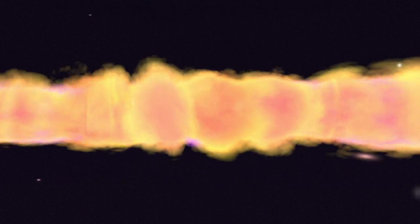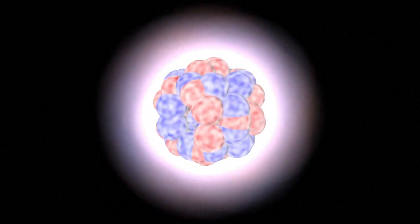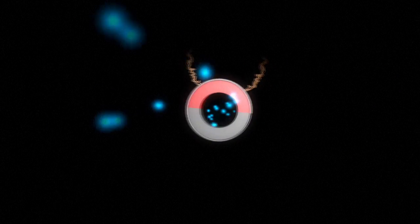Neutrinos are among the most abundant and elusive subatomic particles in the universe. Almost impossible to detect, they have no electric charge, meaning that they can quite literally pass through matter.